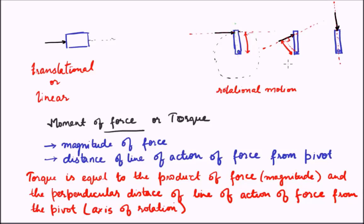Now we have seen three different examples where the same force — that is, the same magnitude — but the direction of application is different, leads to completely different values of torque, since the perpendicular distance changes.